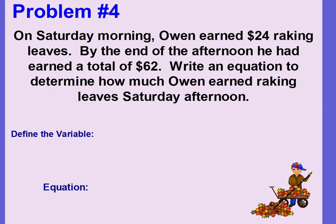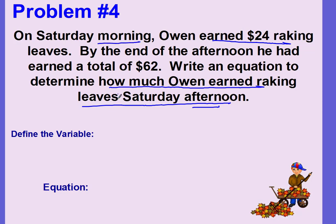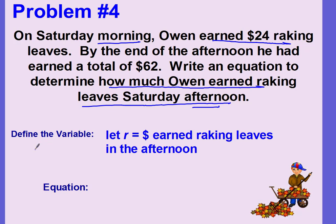Problem number four. On Saturday morning, Owen earned $24 raking leaves. By the end of the afternoon, he had earned a total of $62. Write an equation to determine how much Owen earned raking leaves Saturday afternoon. We're not given the variable, so we're looking for how much Owen earned in the afternoon. Let r equal money earned raking leaves in the afternoon.